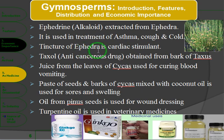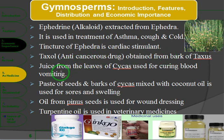Tincture of Ephedra is a cardiac stimulant, used to stimulate and help cure heart conditions. Taxol is an anti-cancerous drug derived from the bark of Taxus. The juice of the leaves of Cycas is used for curing blood vomiting. A paste made from the bark and seeds of Cycas mixed with coconut oil is used as a skin dressing for swelling.